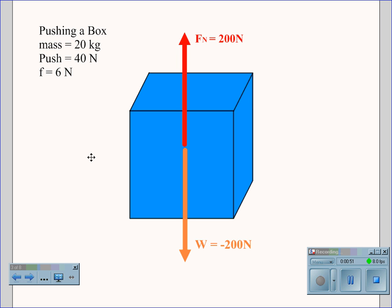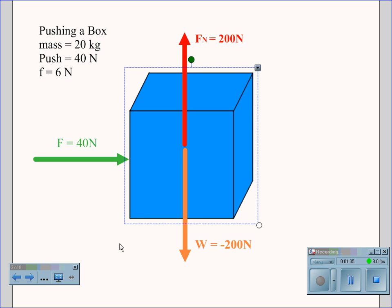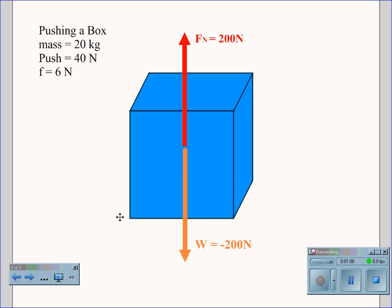We would now turn our attention to the horizontal vectors. The first vector represents the push force, which was given to us in the problem, and the push force is 40 newtons. We would next look at the friction force, which is given to us as 6 newtons. So we have a 40-newton push force and a 6-newton friction force acting against each other.